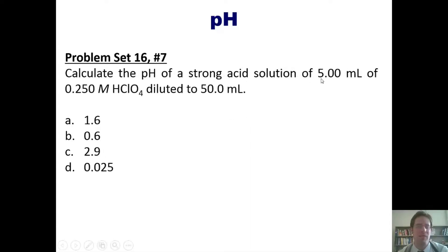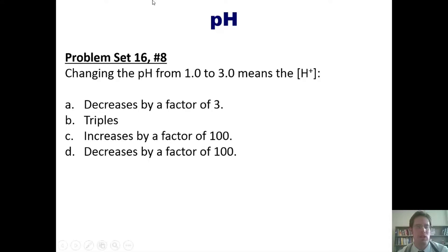And now this question: calculate the pH of a strong acid solution of 5 milliliters of this concentration of perchloric acid diluted to 50 milliliters. Once again, you're welcome to attempt this on your own, and then if you like, you can click this link to watch me do it for you on the board.